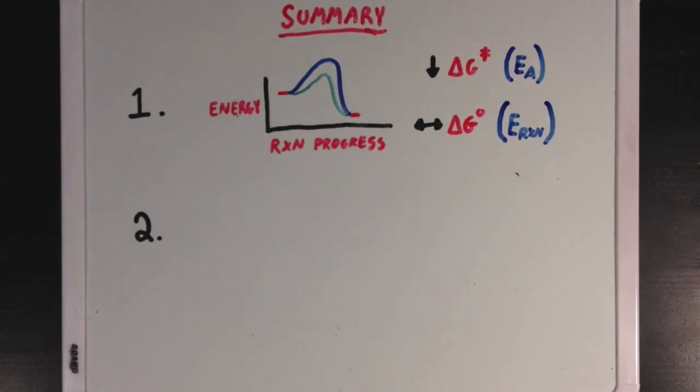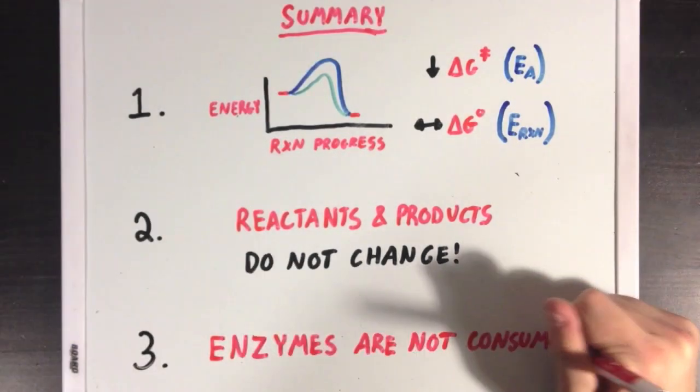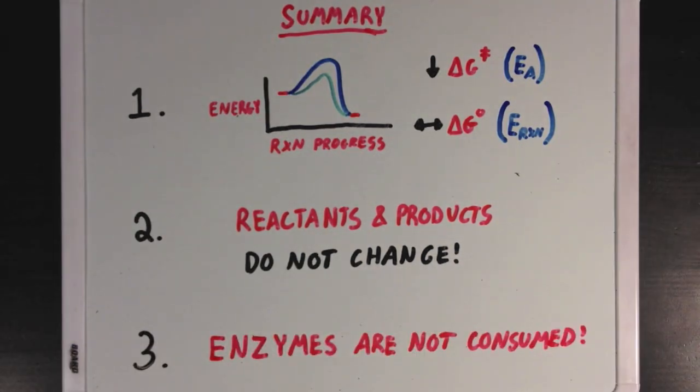Second, we learned that despite the change in pathway to get from A to B, the reactants and products do not change when using an enzyme versus when not using an enzyme. And finally, we learned that enzymes are not consumed when they catalyze a reaction, and the same enzyme can catalyze reactions over and over again.